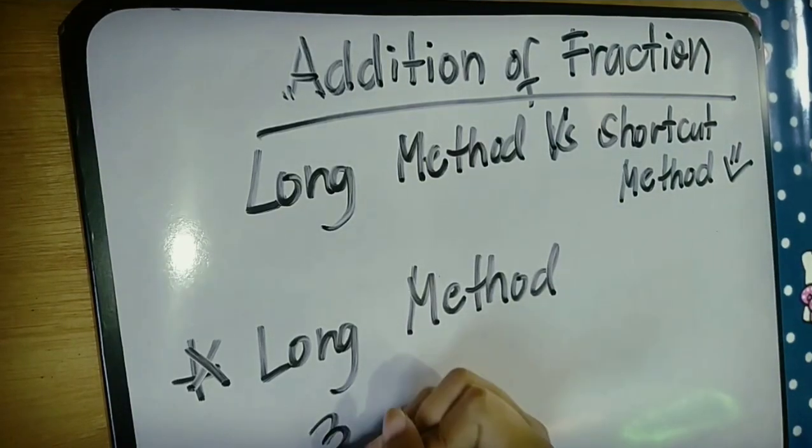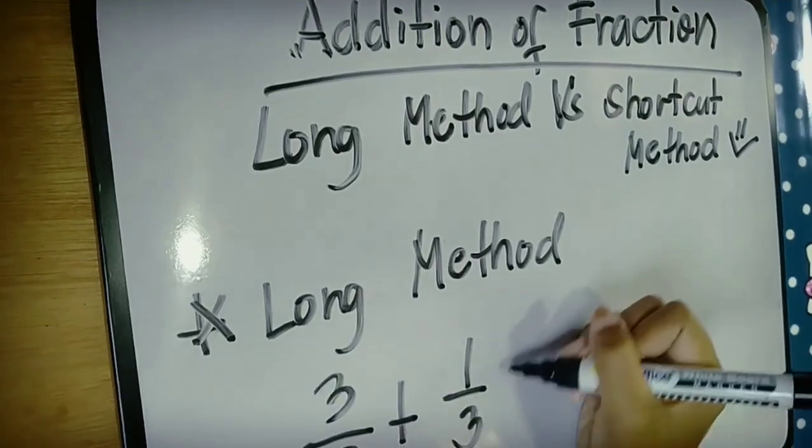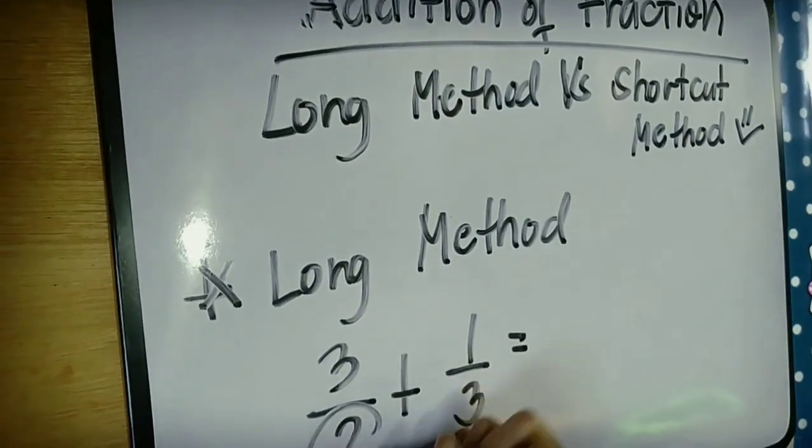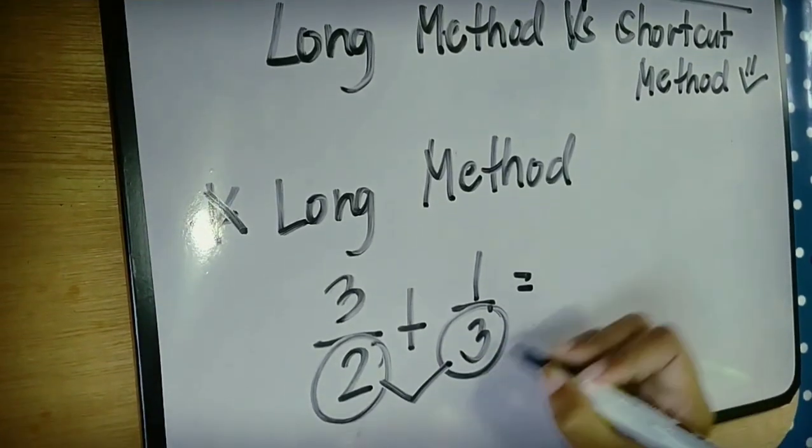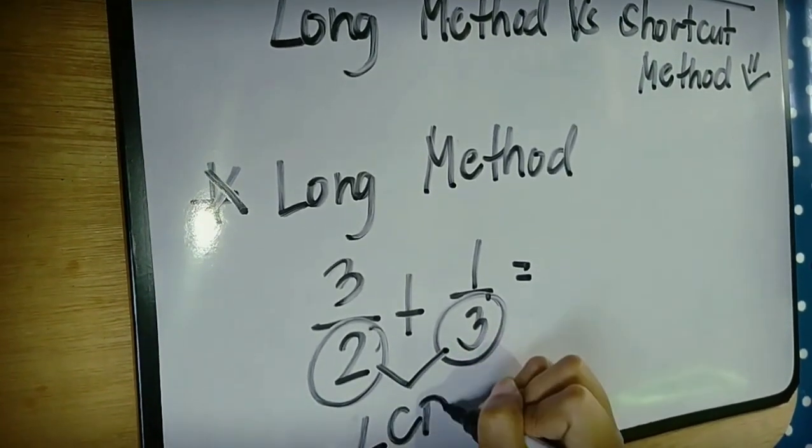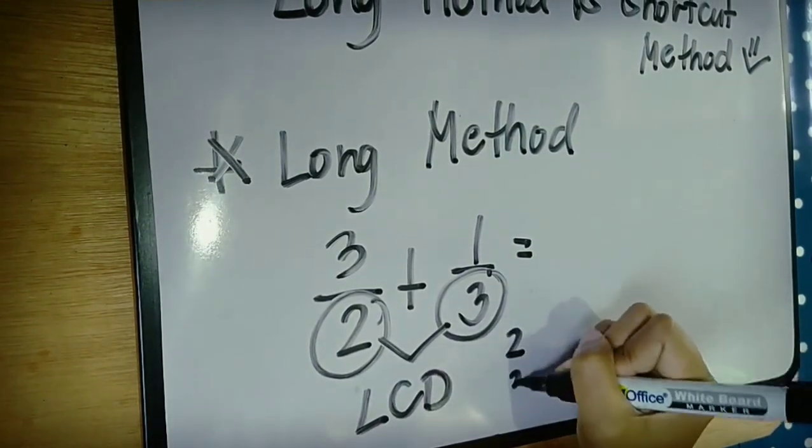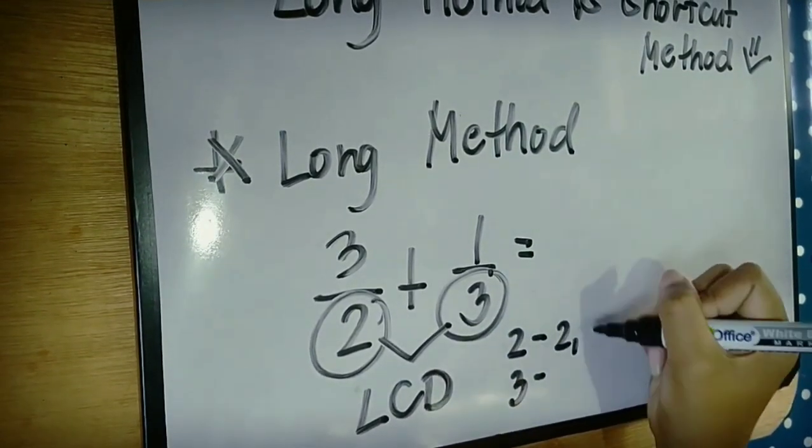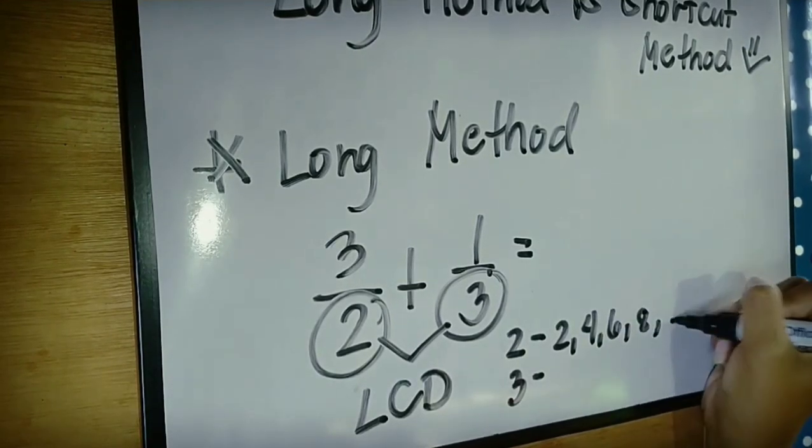Example: 3 over 2 plus 1 third. As you notice, the denominators are not the same. So we will find first the LCD or the least common denominator. We must list all the factors of the denominators 2 and 3.